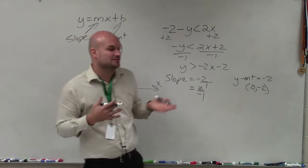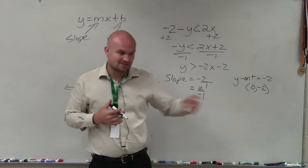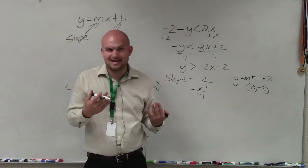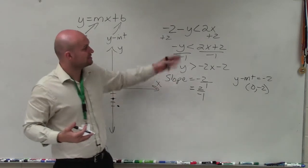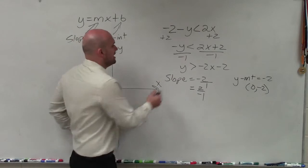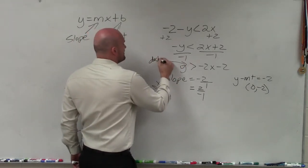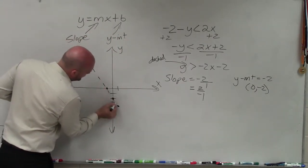Now before I graph my line, I want to make sure am I dealing with a line that's going to be a part of my solution or not a part of my solution. We represent graphs that are not a part of the solution with a dashed line. You can use test points if you'd like to, but the easiest way to determine if it's dashed or solid is to look at your inequality symbol. Whenever it's less than or greater than, it's going to be dashed. Whenever it's less than or equal to or greater than or equal to, it's going to be solid. So therefore, I'm going to have a nice dashed line here.